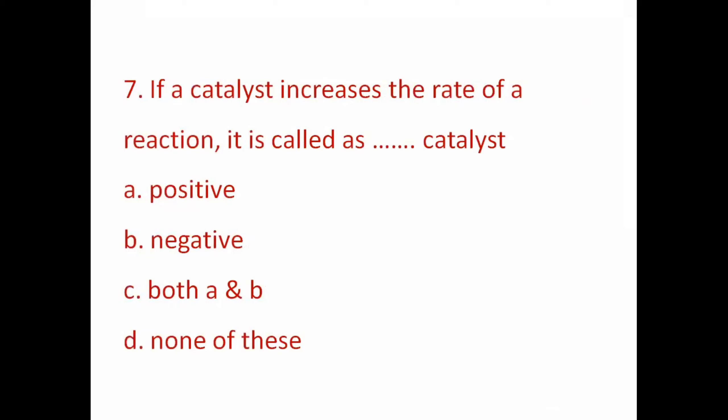If a catalyst increases the rate of reaction, it is called: A) Positive catalyst, B) Negative catalyst, C) Both, D) None of these. The right answer is A — positive catalyst. If a catalyst decreases the rate of reaction, it is called a negative catalyst — B is the right answer.